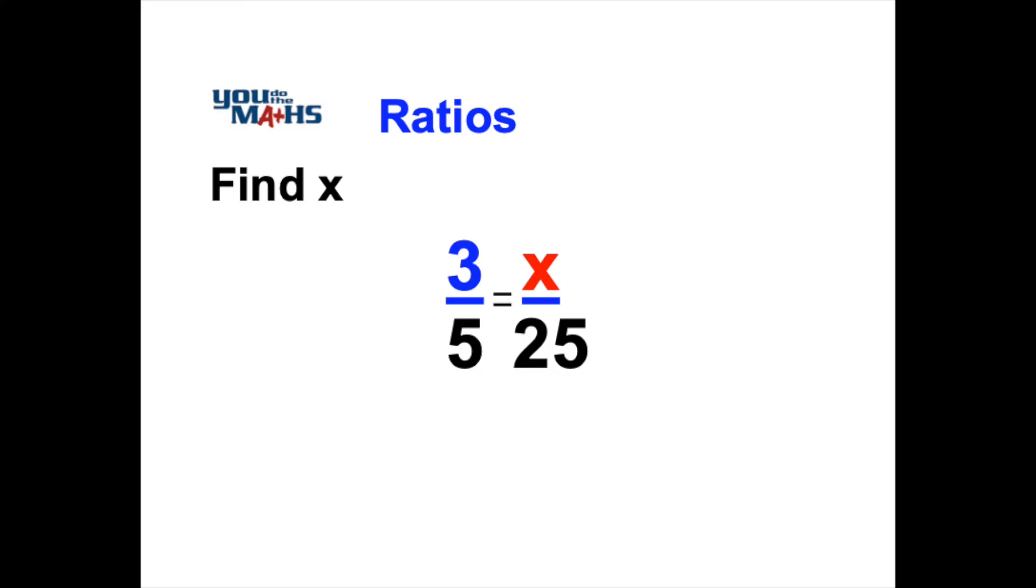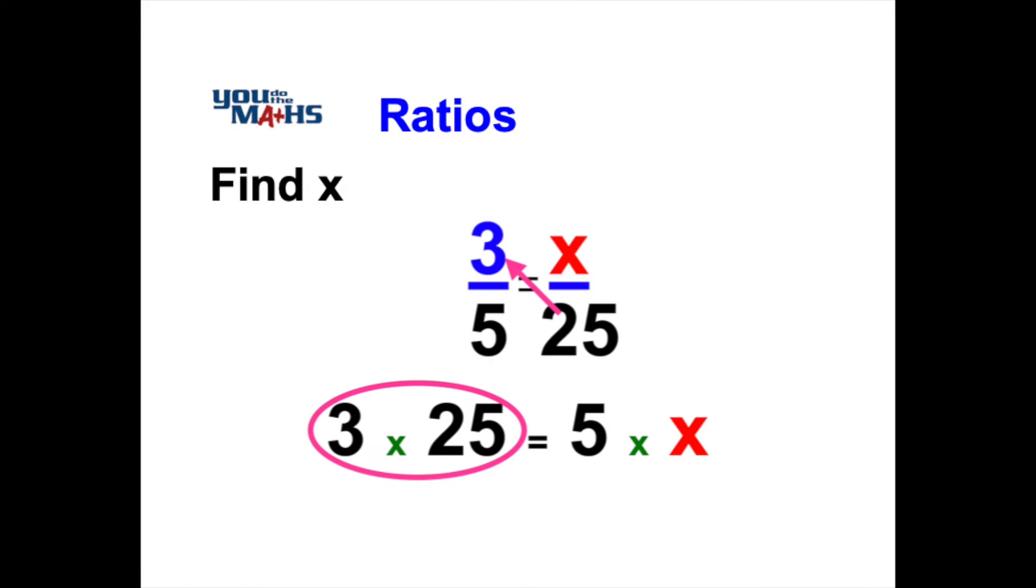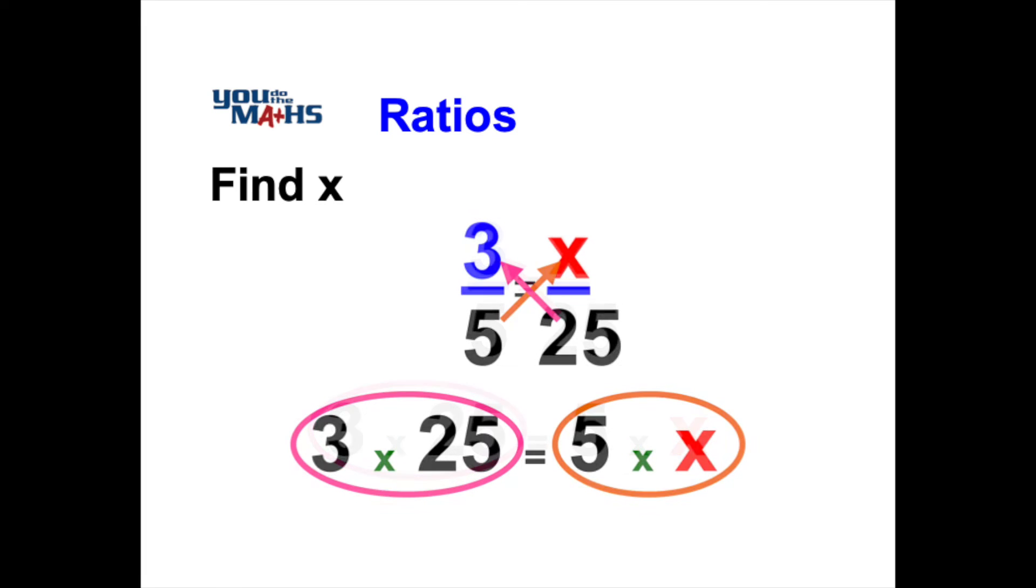So we use the 25 of the denominator on the right hand side and multiply it to the numerator on the left hand side which is 3, and then 5 which is the denominator on the left hand side is multiplied across to the numerator on the right hand side which is x.